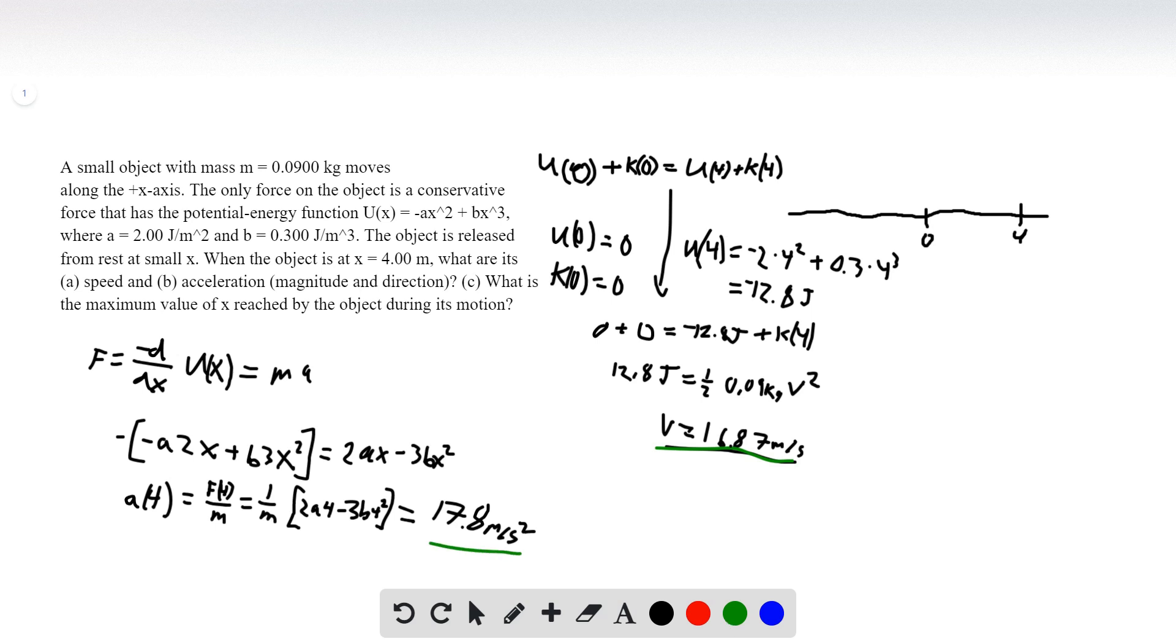And then C, what is the maximum value of x reached by the object during this motion? So if we were to plot this on a 2D graph, what the potential energy function looks like, it would look something like this. It would reach a max at 0, down and up at some point over here. So what we need to do is we need to find out what the maximum value of x is. And to do that, we simply just need to set the potential energy equal to 0 and find out what x solutions are possible.